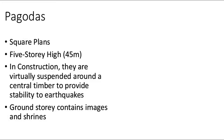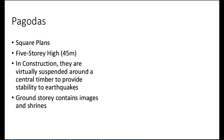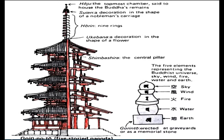A pagoda is a five-story high religious structure, square in plan. In construction, they are virtually suspended around a central timber to provide stability against earthquakes; the ground story contains images and shrines. Here is a typical layout of the Japanese pagoda. The five elements represent the Buddhist universe: sky, wind, fire, water, and earth.